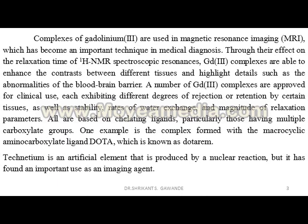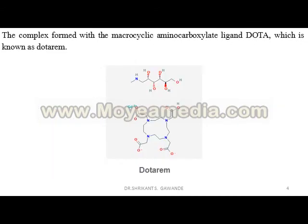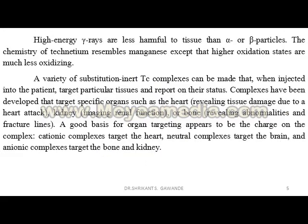Technetium is an artificial element that is produced by a nuclear reaction, and it has found important use as an imaging agent. High energy gamma rays are less harmful to tissue than alpha or beta particles. The chemistry of technetium resembles manganese, except that higher oxidation states are much less oxidizing.